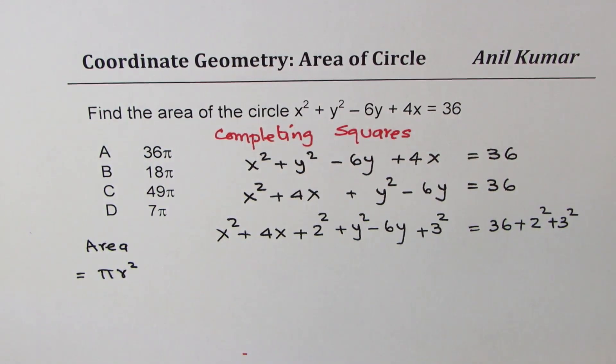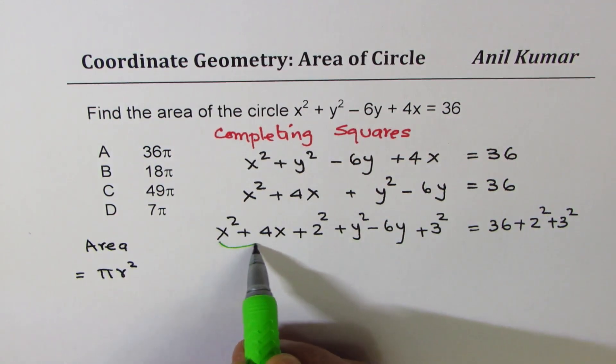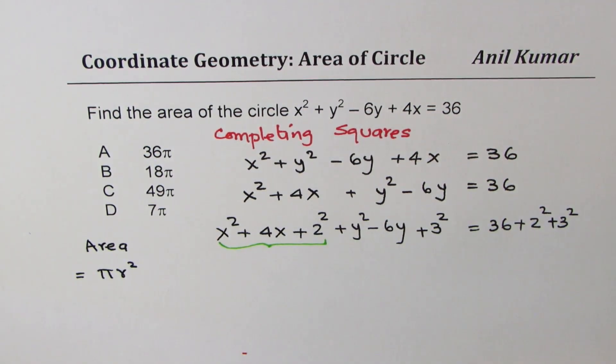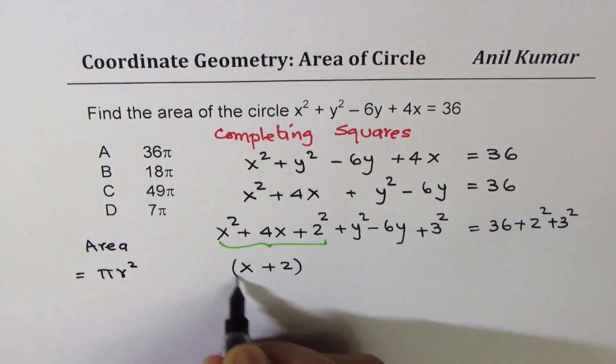Now these three terms, x² + 4x + 2² becomes a perfect square. We could write this as (x + 2)².